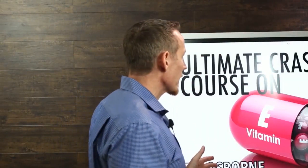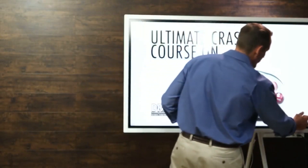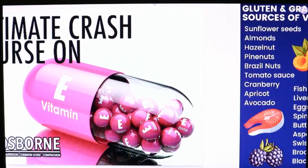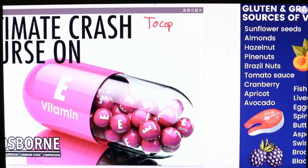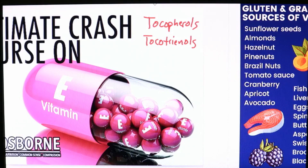Let's talk about vitamin E. What exactly is vitamin E? It was discovered in 1922. Vitamin E is a mixture of different compounds called tocopherols, which you may see on a supplement bottle. It's also a family of chemicals called tocotrienols. There's an alpha, beta, delta, and gamma version of these two groups, so think of vitamin E as not one vitamin but a family of eight different compounds.